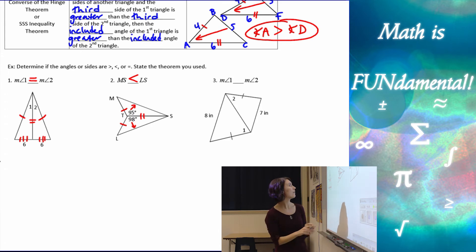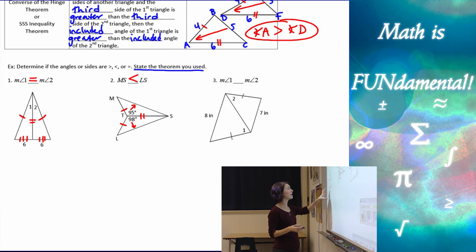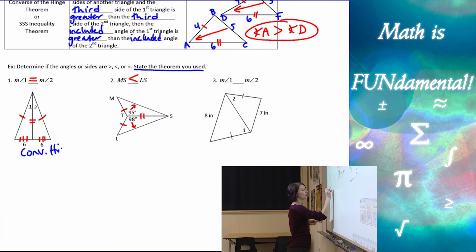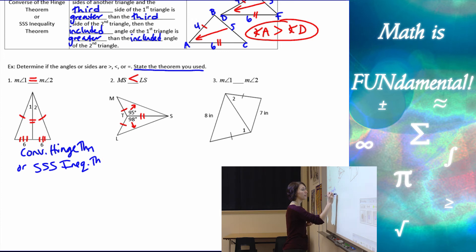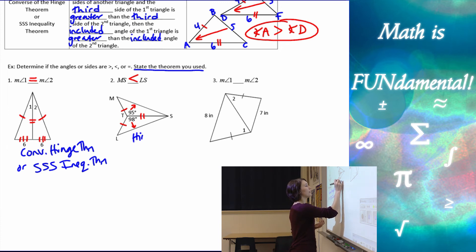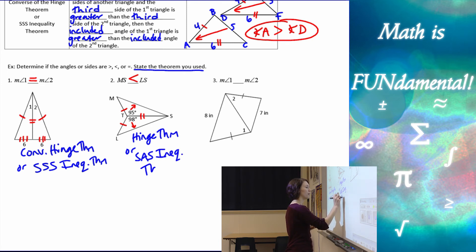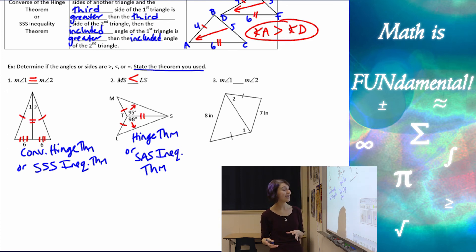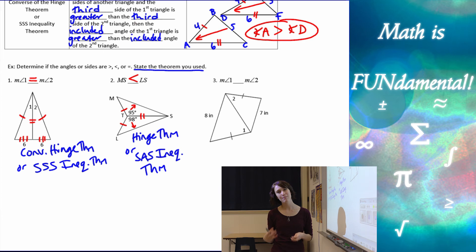Now let's state the theorems used. In the first problem, we were given information about all the sides and concluding something about the angles — that's the converse of the hinge theorem, or the side-side-side inequality theorem. In the second problem, we were given two sides and an angle, so that's the hinge theorem, or the side-angle-side inequality theorem. Be careful not to mix this up with the side-angle-side congruence or similarity theorems — that's why we give it the separate name 'hinge theorem.'